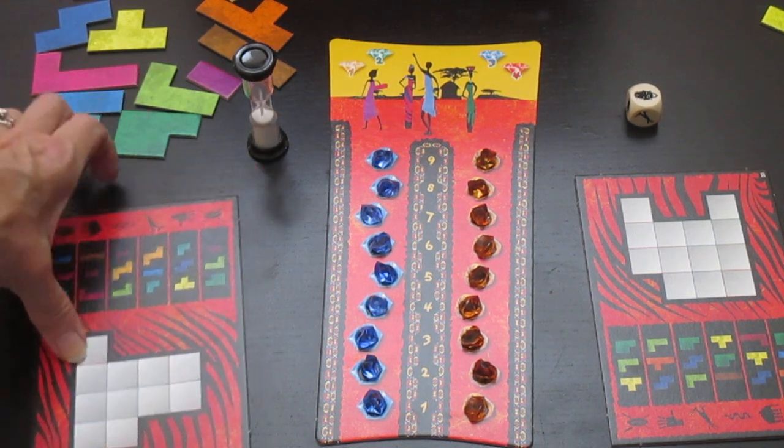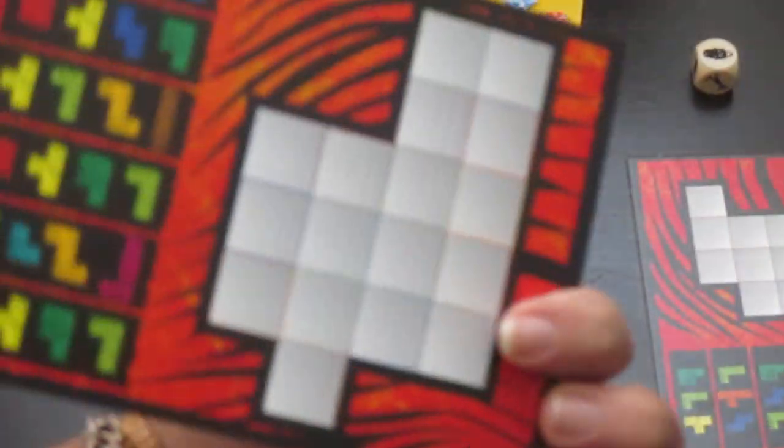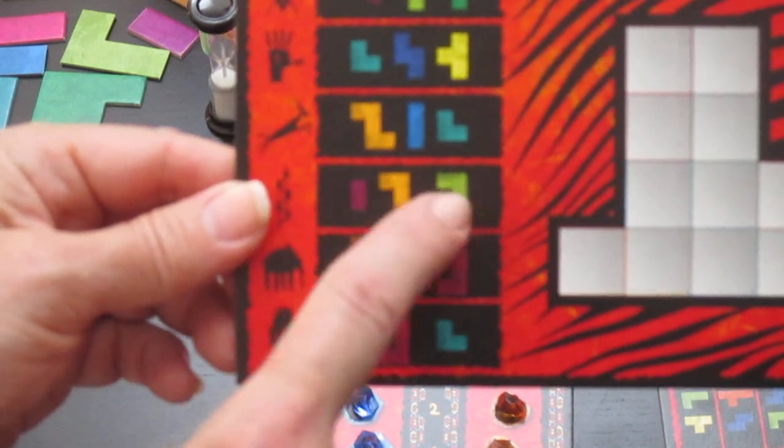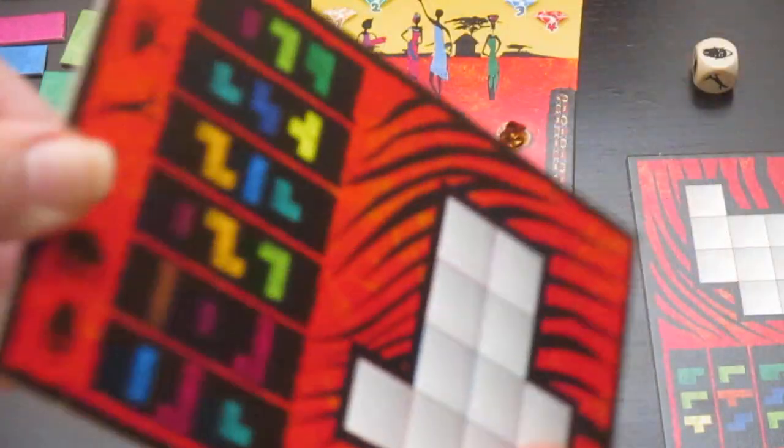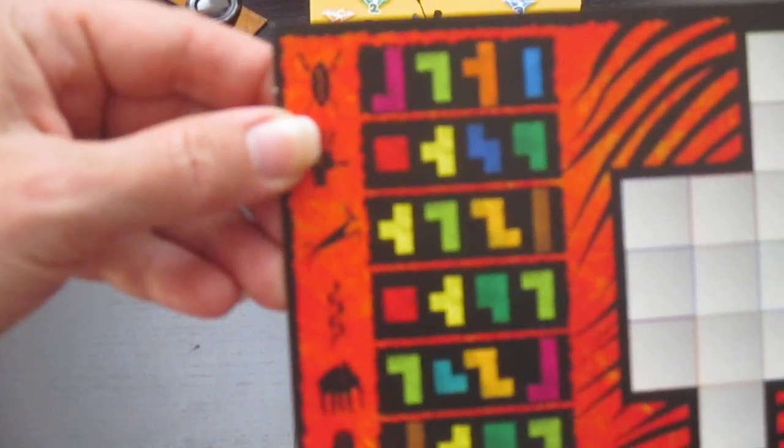You get one playing board, and if you notice a playing board there are two sides. There is an easy side which is you use three pieces to solve the puzzle, and there is a challenging side which is you use four pieces to solve the puzzle.